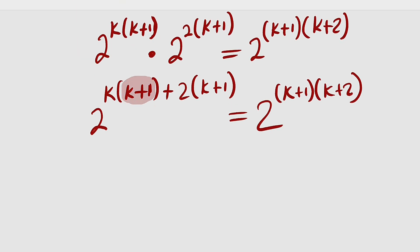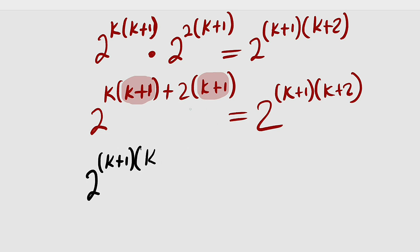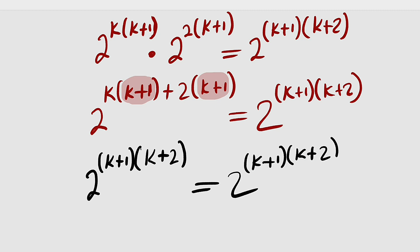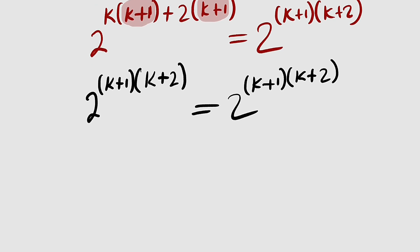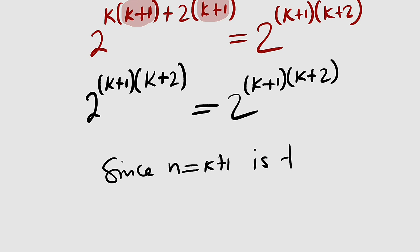From here we can see we have a common factor of k plus 1, so we factor it out. We have 2 to the power of k plus 1, and from the first term k is left, and from the second term 2 is left, giving k plus 2. This is exactly the same as the right hand side: 2 to the power of k plus 1 multiplied by k plus 2. Since the left and the right hand side are the same, n equal to k plus 1 is true, therefore the statement is true for all n in the set of natural numbers.